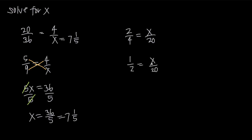With x in the numerator, really all I'm saying is: what's 1 half of 20? If I multiply both sides by 20, the 20 cancels on the right-hand side and I'm left with x equals 20 times 1 half, which of course is 10. We can see just by looking at this that x equals 10, because 1 half equals x over 20 means x has to be 10. I could also say I have to multiply 2 by 10 to get 20, which means I multiply 1 by 10 to get 10, so x equals 10.